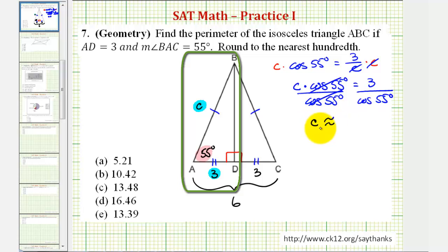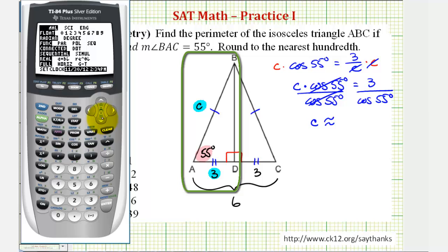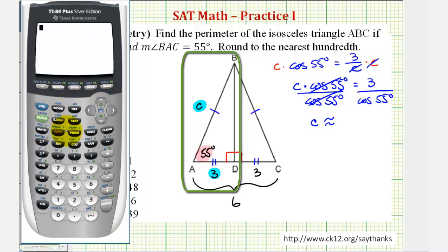Now we'll go to the calculator to approximate the value. It's important that we verify we are in degree mode so we find this cosine function value correctly. Press the mode key, go down to the third row and highlight degree, press enter while it's flashing on degree, then go back to the home screen using second mode. Now we'll enter three divided by cosine 55 degrees. Rounding to the hundredths, C is approximately 5.23.